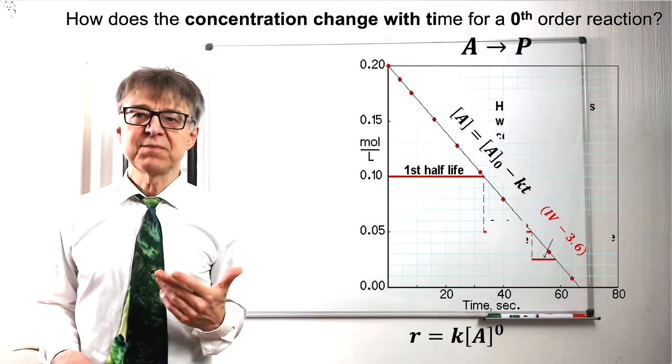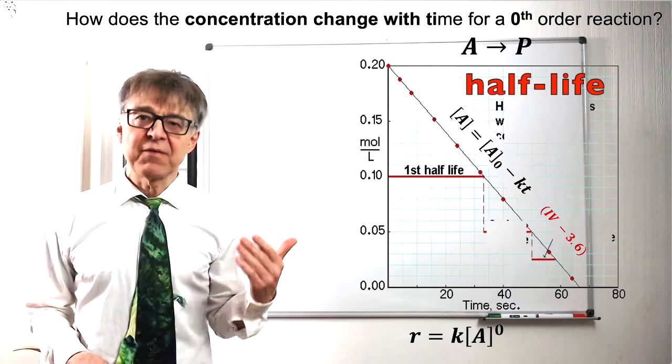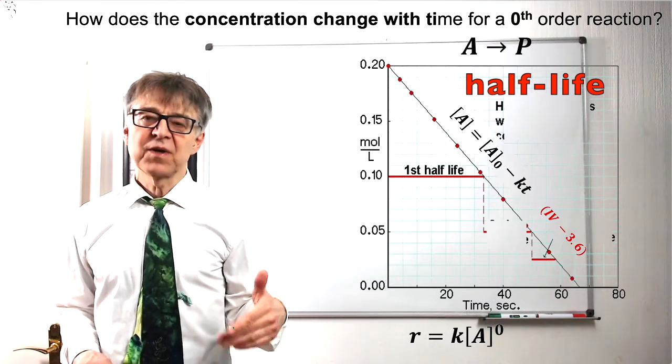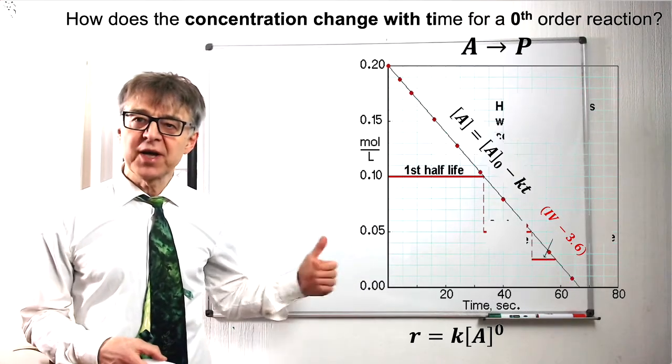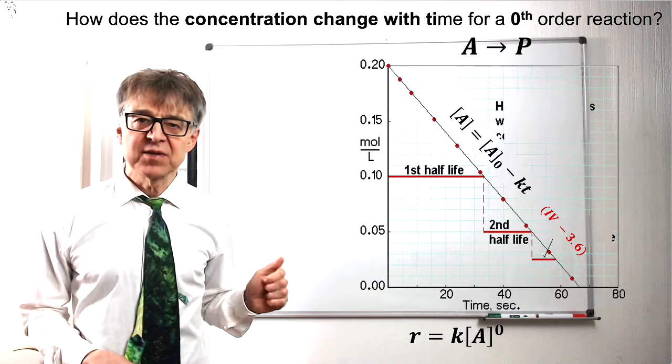An important parameter to specify a reaction is the half-life. During a zeroes order reaction, the half-life becomes shorter and is related to the rate constant in this way.